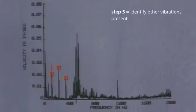Step five is to identify other vibrations present and we'll give you some examples. First of all, let's say you mark a peak with the cursor and a string of additional cursors appears, each marking another peak. These peaks are known as harmonics. They are whole number multiples of the peak you selected.